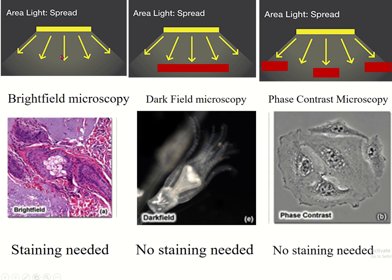In bright field microscopy, the whole light source is used. In dark field microscopy, the central light source is blocked by a non-transparent object and only the peripheral light is used. In phase contrast microscopy, both the central and peripheral light sources are blocked by the non-transparent object and only the intermediate portion is used. Staining is required in bright field microscopy.